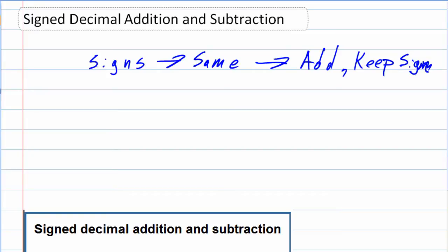And when they are different, then we no longer add. This is when we subtract, and this is where we have to figure out what the sign is, so we keep the sign of the larger.